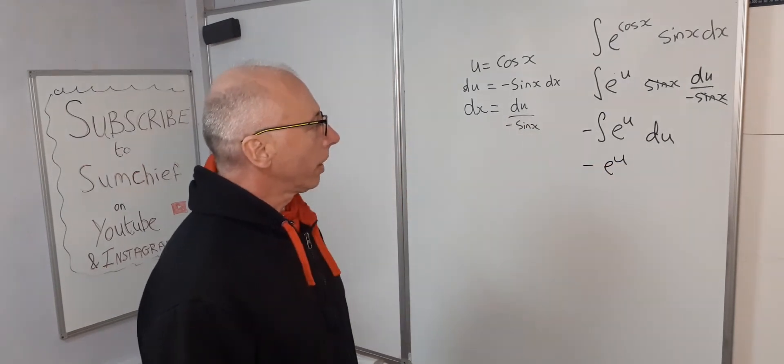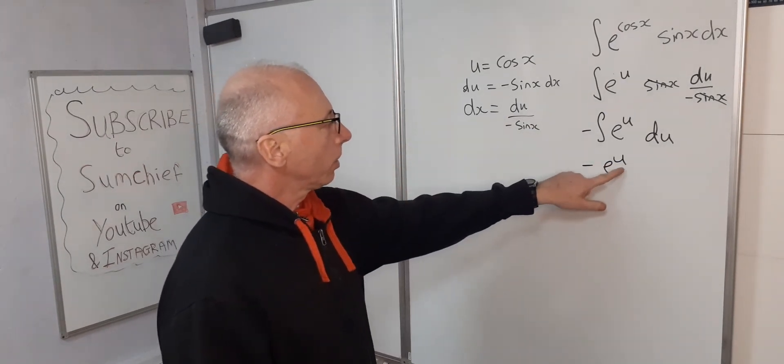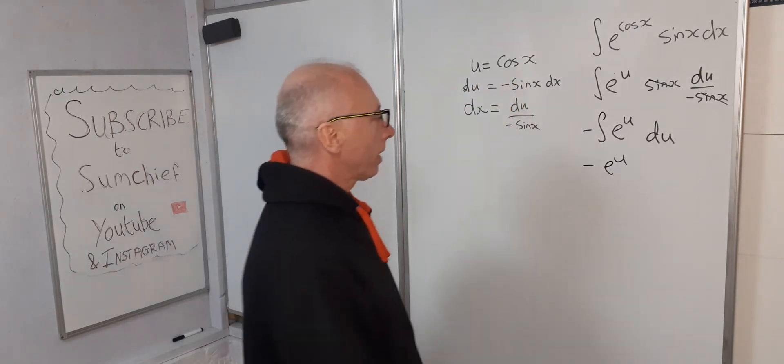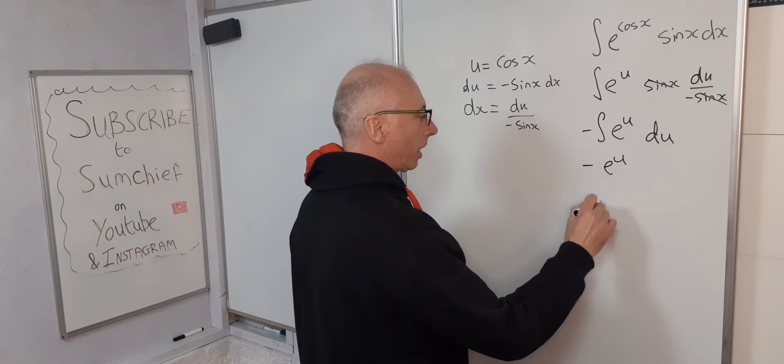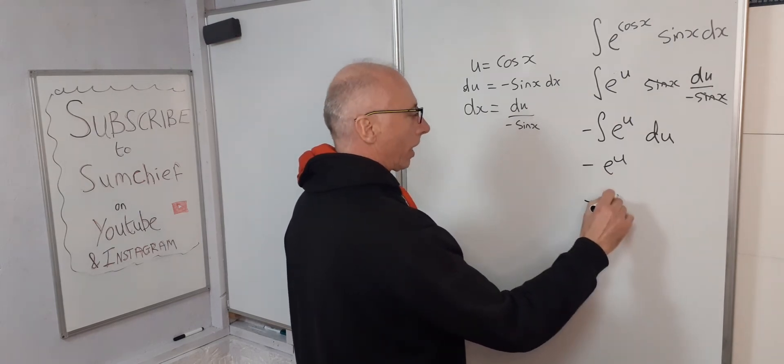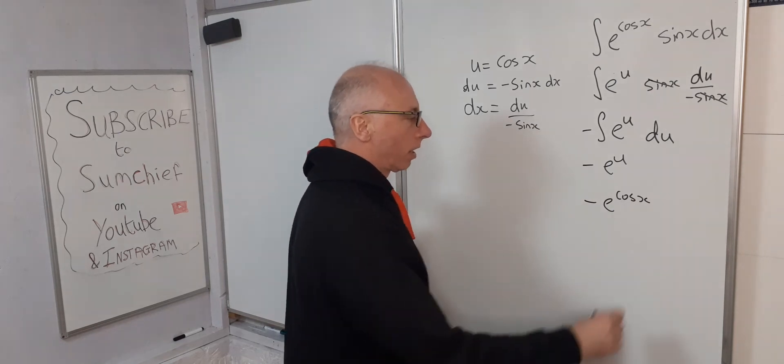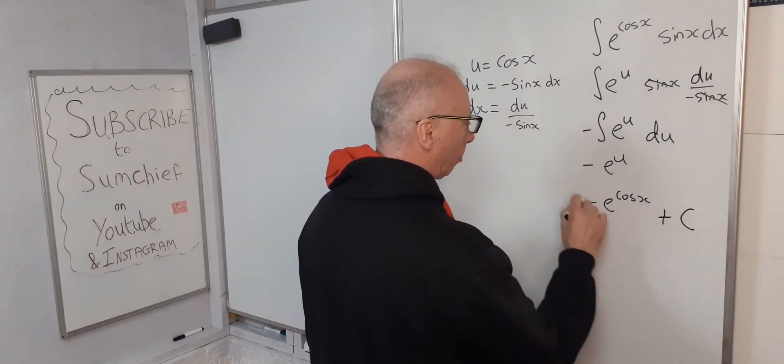Okay, and that's good. So now all we need to do is go back into the x world where u is cosine x. So now we've got e to the cosine x, or negative e to the cosine x. And don't forget plus c.